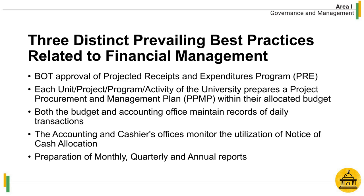Distinct prevailing best practices related to financial management: first, presentation for approval to the Board of Regents of the projected income and proposed expenditure program for all funds of the university; second, each unit, project, program, or activity prepares a project procurement and management plan or PPMP within their allocated budget; third, both the Budget and Accounting Office maintain records of daily transactions; fourth, the Accounting and Cashier's Offices monitor the utilization of notice of cash allocation; and lastly, preparation of monthly, quarterly, and annual reports.